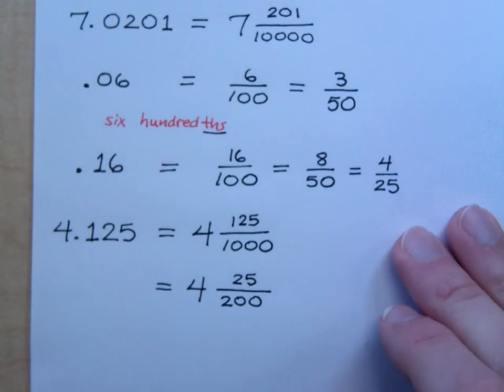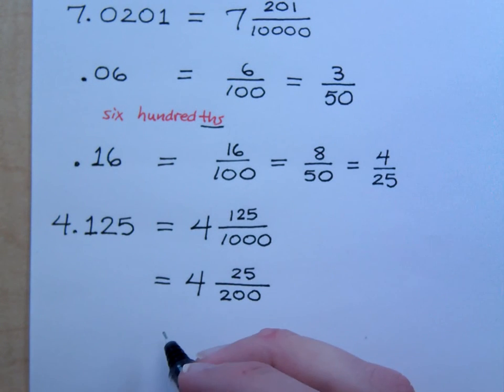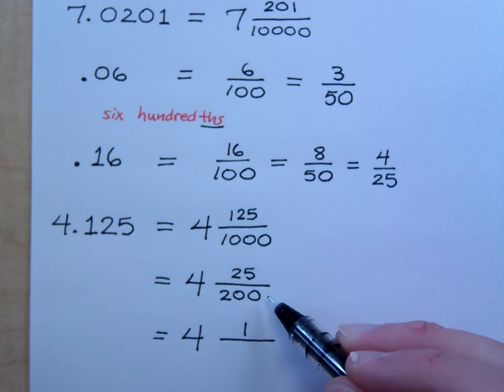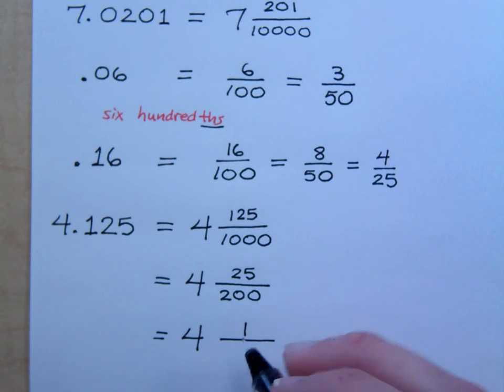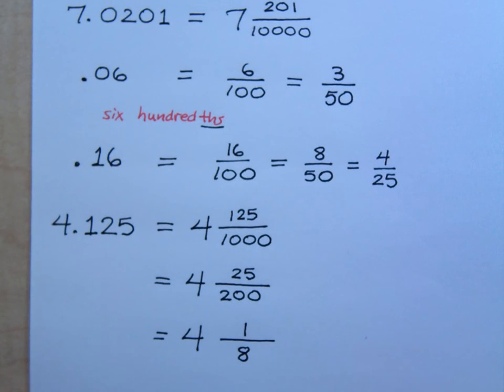Yeah. Does twenty-five go into both of them? Twenty-five goes into both of them. I know twenty-five goes into itself one time. Think about twenty-five as a quarter. How many quarters go into two dollars? Eight. It's eight. That's a really horrible looking mixed number, but maybe the fraction were a little bit too large. So yeah, four point one-two-five, or four and one-hundred twenty-five thousandths, is the same as four and one-eighth.